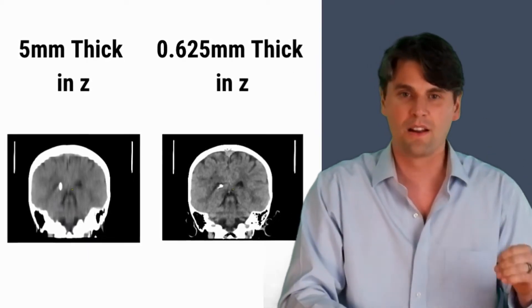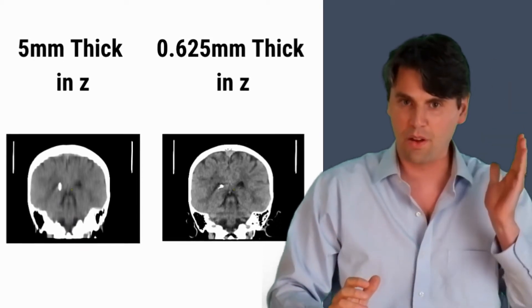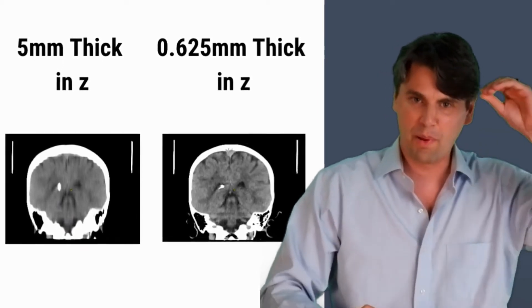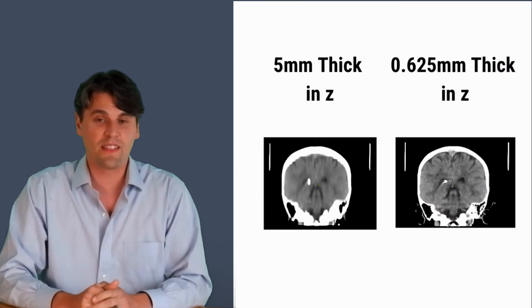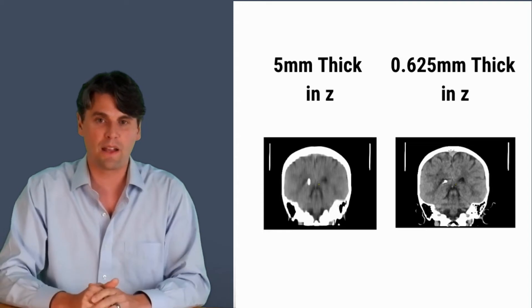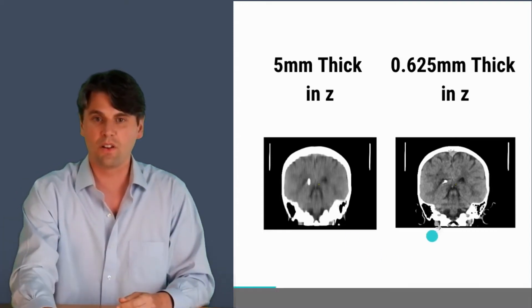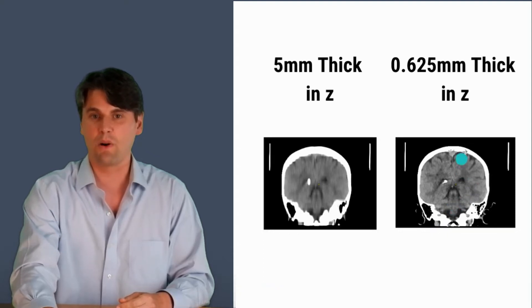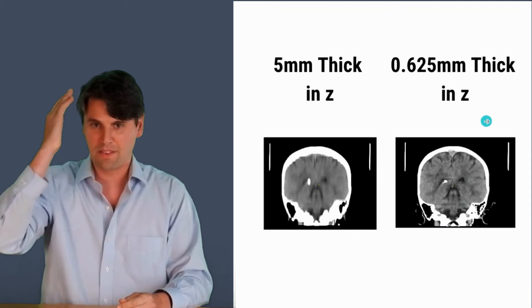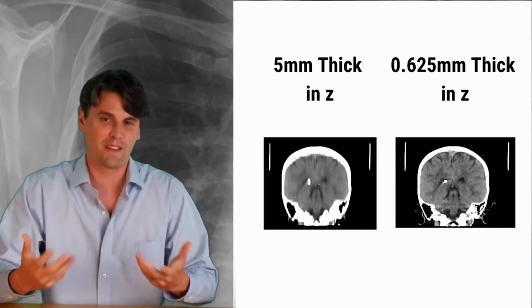Having relatively thin slice images for your reading of the reformats, the quality can be much better where you can well appreciate now the ventricles, and you can also appreciate the differences between the gray and the white matter. And the calvarium itself looks nice and smooth as you would expect. In addition to being able to natively generate these isotropic images, it's also a more efficient acquisition from the perspective of the dose of the patient.